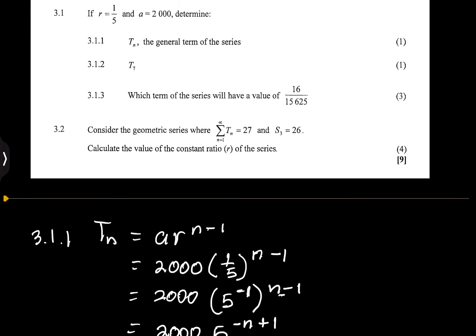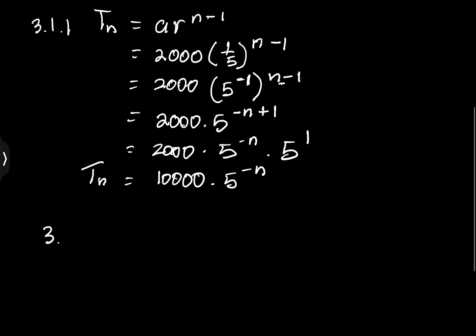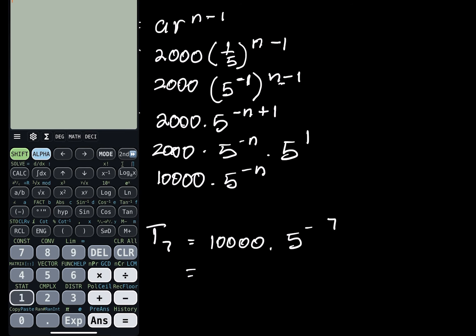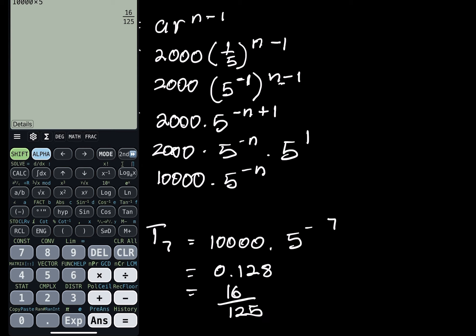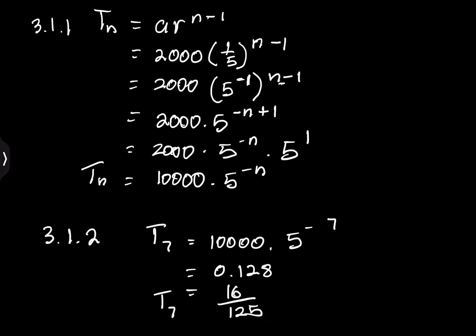For the next part, they ask us to determine the seventh term, t7. Now that we've simplified, t7 is simply 10,000 times 5 to the power of negative 7. Using our calculator, we compute 10,000 multiplied by 5 raised to the negative 7, and the answer is 0.128, which in fraction form is 16 over 125. If you're using a Casio calculator you'll likely get the fraction form directly, and that is our final answer.